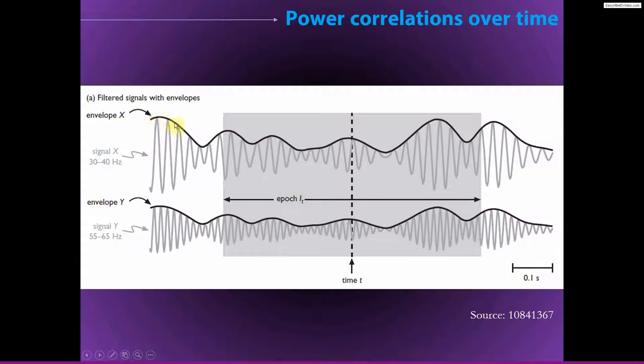And of course, you already know exactly how to do these. You already know how to extract the power time series from a signal. You can notice here that the two signals don't need to be filtered in exactly the same frequency. So this is around 35 hertz, this is around 60 hertz. And still you can correlate the power time series.